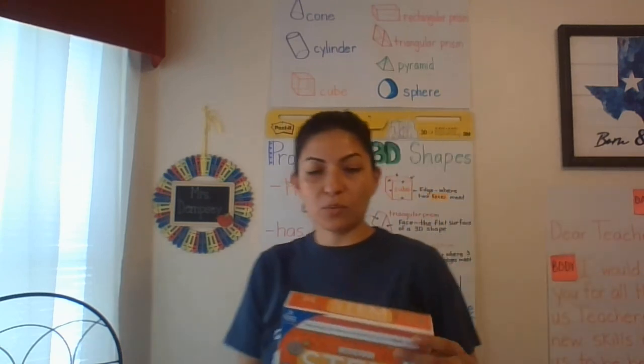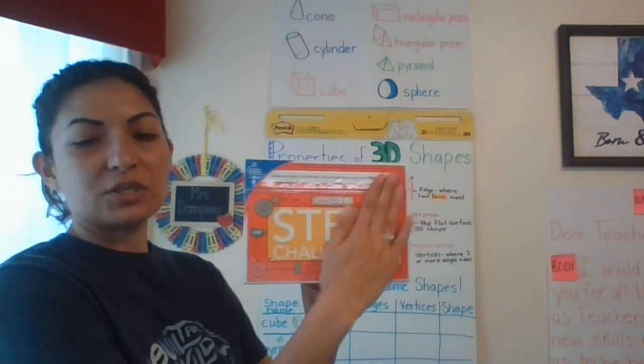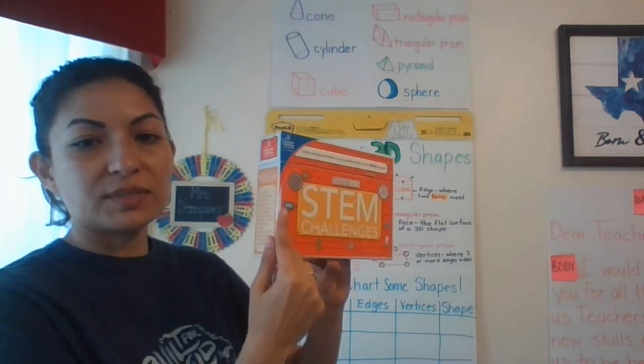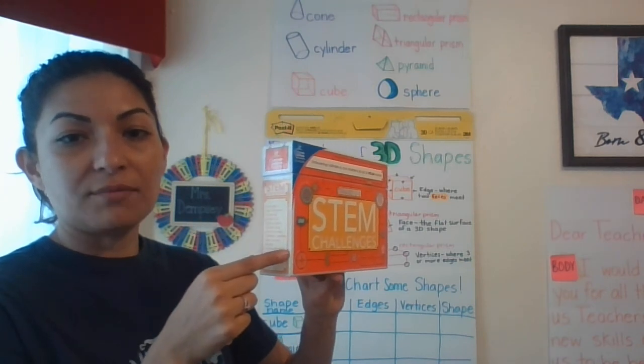So for example, if you were looking at this 3D shape, this would be considered a flat surface or face, as well as this one. Where those two flat surfaces meet, right here would be considered the edge of that 3D shape.